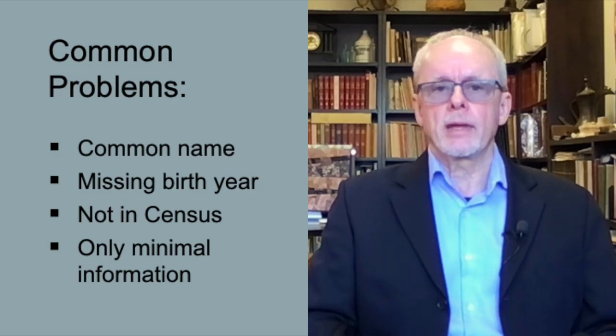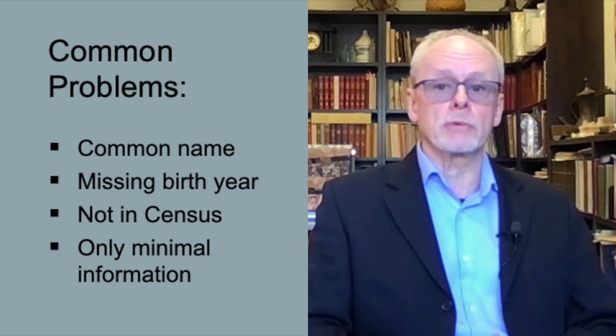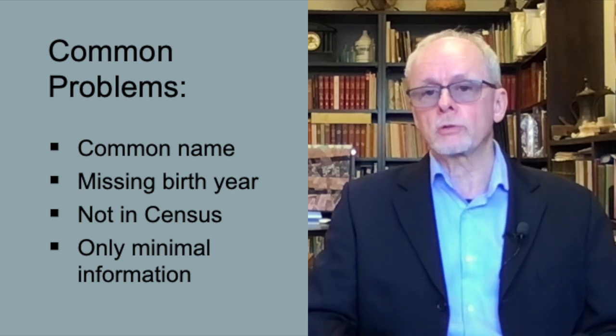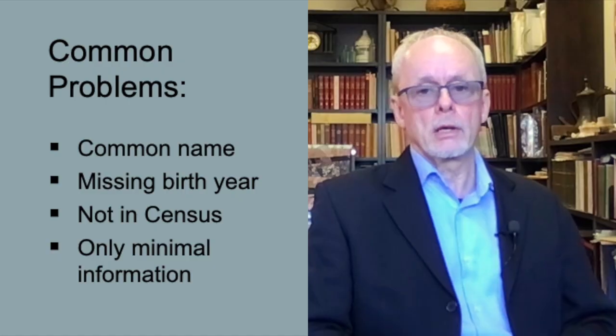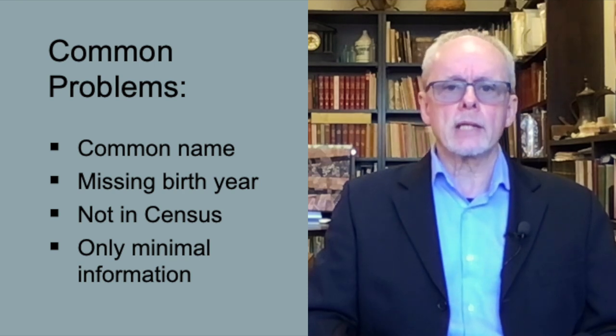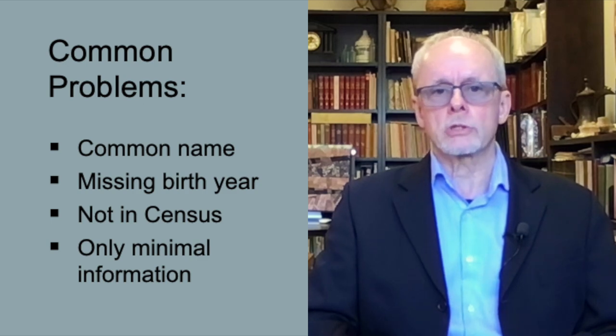Sometimes some obstacle makes it difficult to make much progress on researching that individual. This can occur for a number of reasons that I'll outline in a few minutes, but the main focus for this video is to provide some tips on how to get around those snags and obstacles. The four common problems are: first, the person's name is so common that you find multiple people and aren't sure who is the right one; second, you don't know the person's birth year, or you've found several versions of it; third, the person seems not to appear in any census; and fourth, you can find your person but can't find out anything interesting beyond birth, marriage, children, and death.